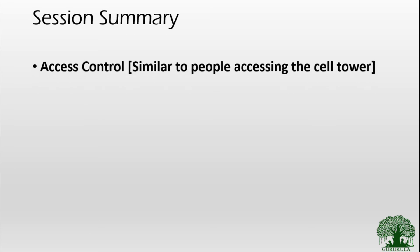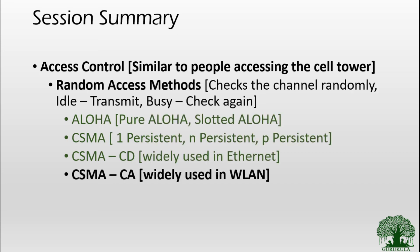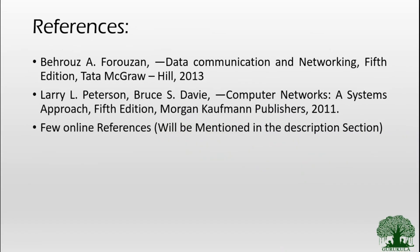So that's all about this video. Today we talked about access control mechanisms, and especially under the random access method we discussed Aloha, CSMA, and CSMA CD in previous videos, and today we completed discussing CSMA CA. A key point to remember is that CSMA CA is widely used in wireless LAN, whereas CSMA CD is widely used in Ethernet, which is a wired connection. All wired networks use CSMA CD and all wireless networks use CSMA CA. Until then, bye from Jai and happy learning.